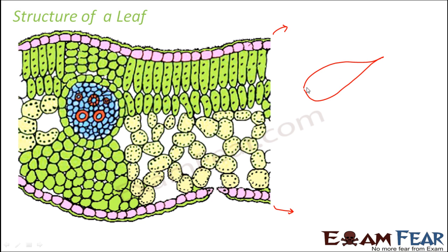If I draw a leaf like this — let's say this is a leaf — just the thickness, imagine how thin it is. I have just magnified that thickness to show what is present inside. This is the upper surface and the other side is the lower surface. In between that, you have the outer layers which are the epidermis — epidermis is present on the upper surface as well as on the lower surface. On this epidermis you have openings, and these openings are stomata.